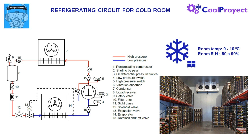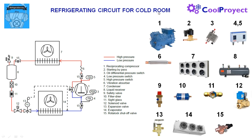We can see on the right of the screen each component numbered and accompanied with a picture. First we have the 4 basic components: number 1 is the reciprocating compressor, number 7 is the condenser, number 13 is the thermostatic expansion valve, and number 14 is the evaporator. Just with these components the system can work, but we usually add some other auxiliary devices in order to improve the functioning of the system.